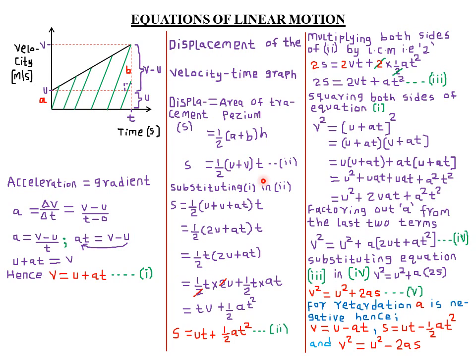To derive equation two further, we substitute equation one — v = u + at — into equation two. Replacing v with u + at gives: s = one-half into (u + u + at) times t. We have like terms inside the bracket: u + u = 2u, so we get s = one-half times (2u + at) times t.